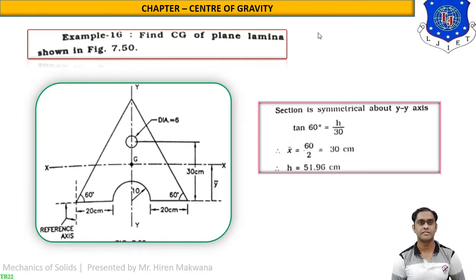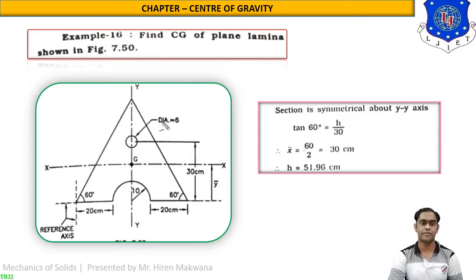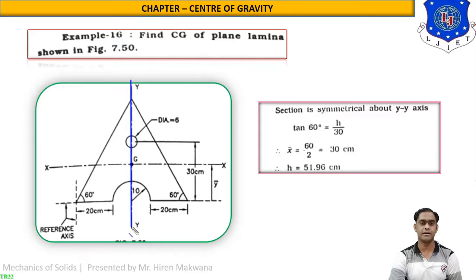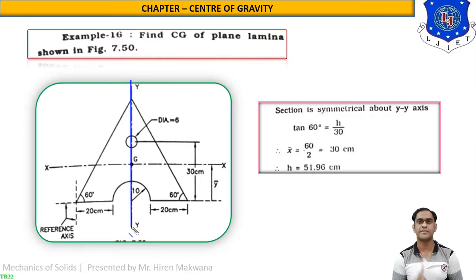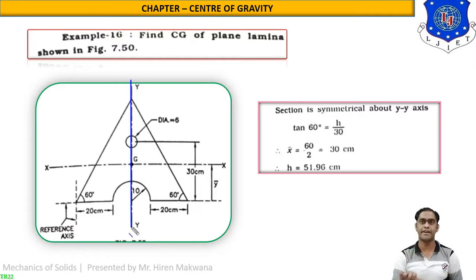We have to find the CG of the plane lamina which is symmetrical. From the figure, if you cut this figure exactly about the y-axis, it forms a mirror image on both sides. So it is symmetrical to the y-axis. Whenever the figure is symmetrical to the y-axis, x-bar can be directly found, which is equal to the width of the section divided by 2.